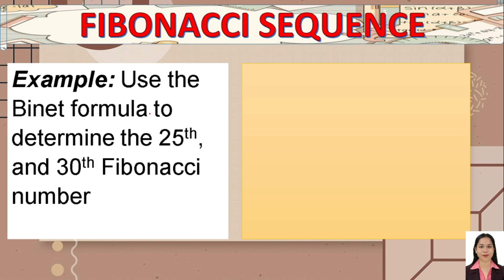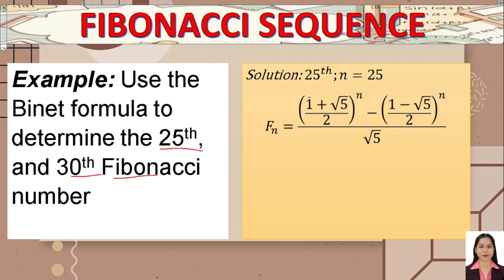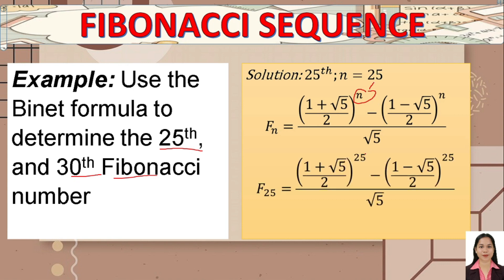Let's use the Binet formula to find the 25th and 30th Fibonacci numbers. For n equals 25, substitute n into the formula and input the full expression into a scientific calculator. The result is f-sub-25 equals 75,025.